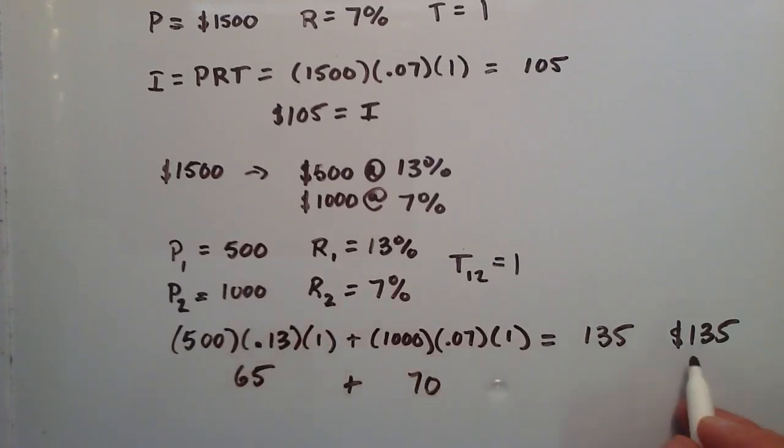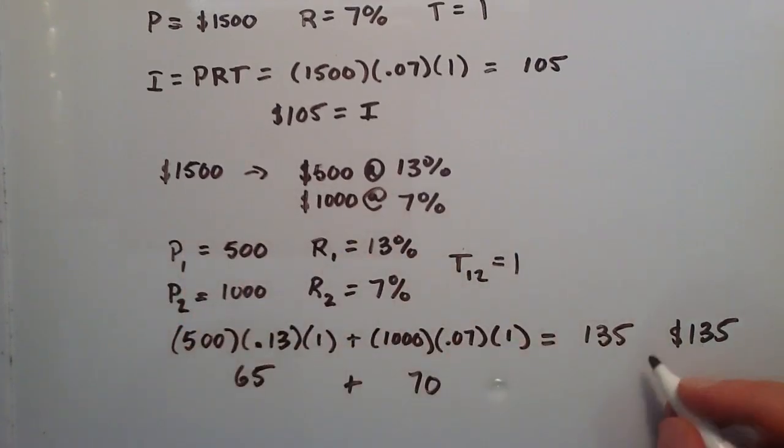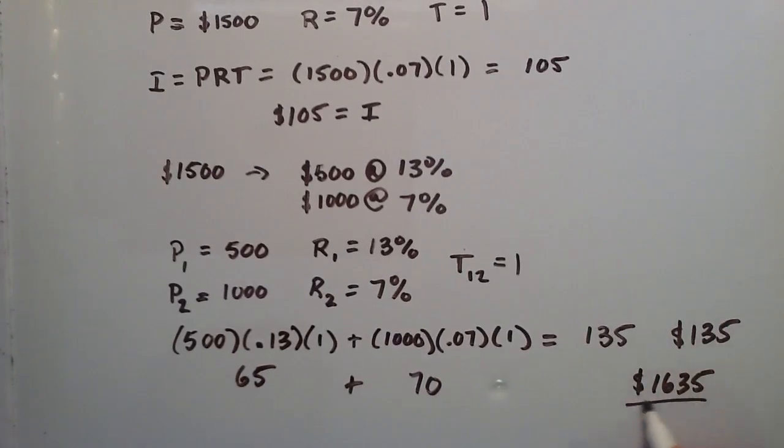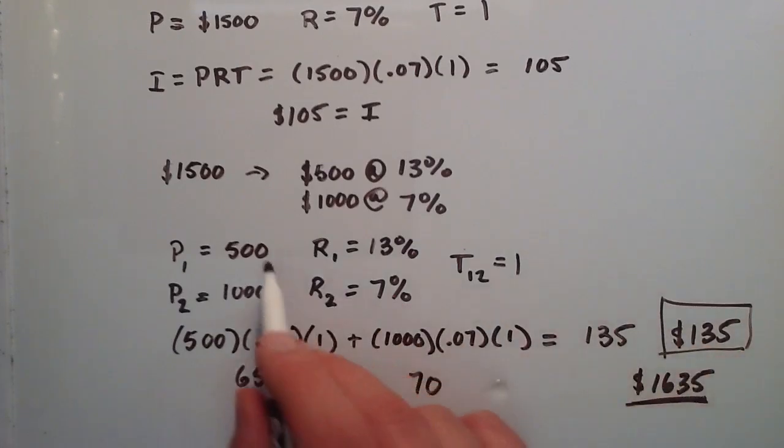So we're basically making $135 by splitting our money up into these two separate investments here. And at the end, when we add this to what we started with, $1,500 plus the $135 would give us $1,635 as our total value at the end.